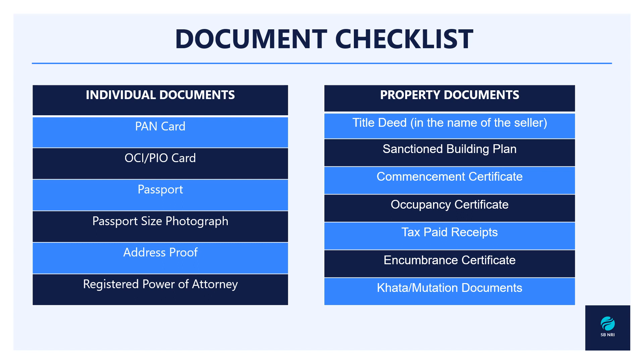Now let's understand the document checklist. Initially, we'll talk about individual documents. To buy a property in India, an NRI must have their PAN card. If they are an OCI or PIO cardholder, they must present that as well. A passport is essential, along with passport-size photographs, address proof, and a registered power of attorney if they are staying abroad and want to authorize someone in India to conduct transactions.